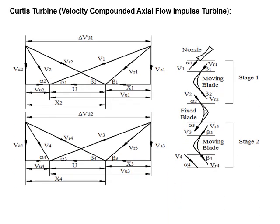See the velocity diagram here. Initially, fluid exits from the nozzle. The velocity is called the absolute velocity of the fluid at inlet, and the corresponding nozzle angle is taken as alpha 1. The fluid then flows through the moving blades. The relative velocity of the moving blade at inlet is given as Vr1, and the relative velocity of the fluid at exit is Vr2. The corresponding blade angles at inlet and exit are beta 1 and beta 2. This nozzle and moving blade comprise the first stage.